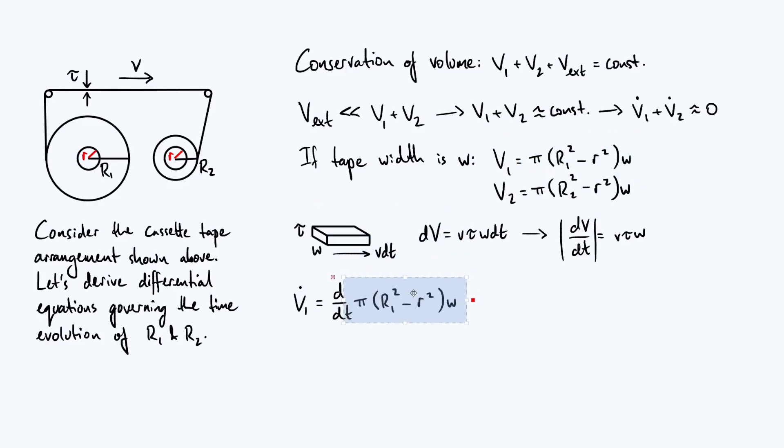π r1 squared minus small r squared times w, and we said we're going to set that equal to minus v τ w.